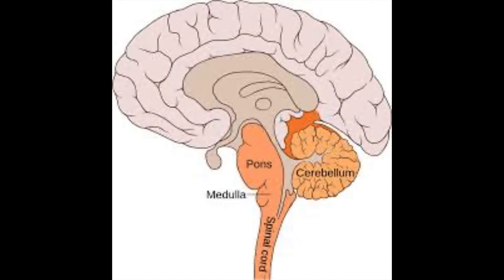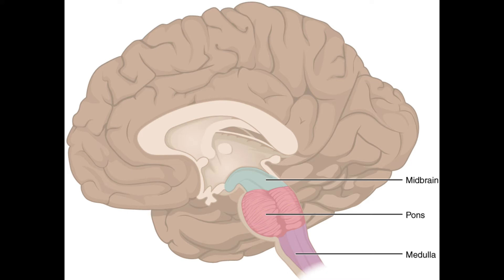Hello, Assalamu Alaikum, welcome to another video. Today we are going to study the brainstem. After the spinal cord, if we go upward, we will have a look at a structure which is kind of the tail of the brain. That tail is known as the brainstem, and it connects the spinal cord with the brain, the cerebral cortex, and some other structures of the brain.